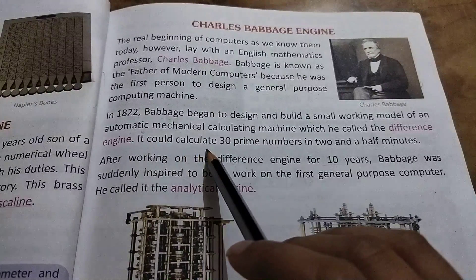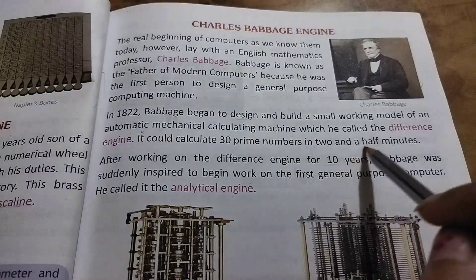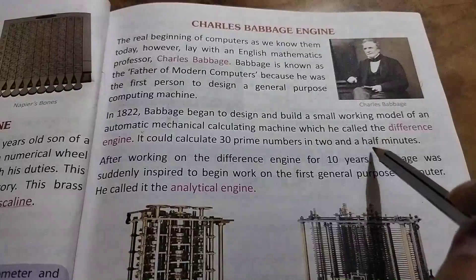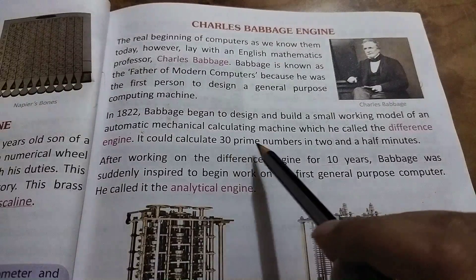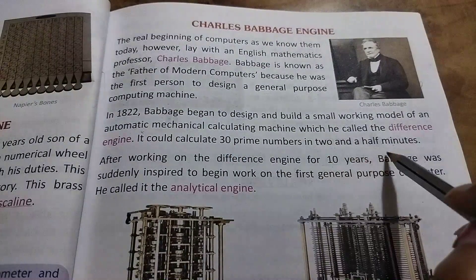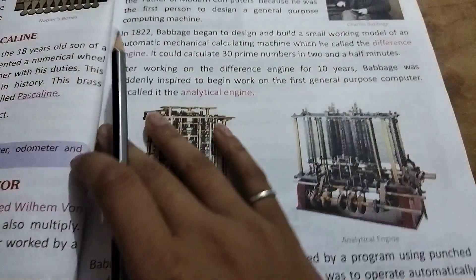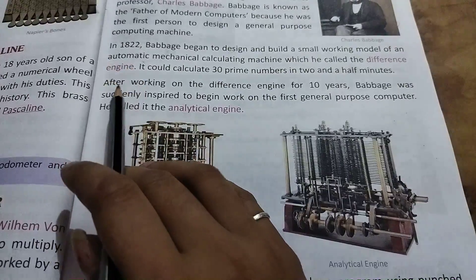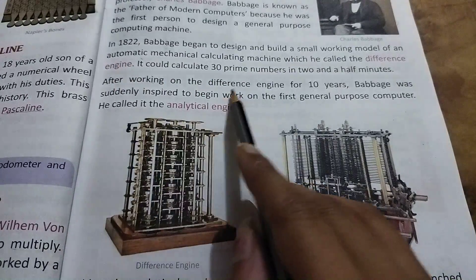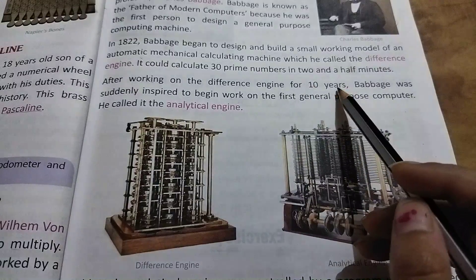The Difference Engine could calculate 30 prime numbers in 2 and a half minutes. After working on the Difference Engine for 10 years, Babbage was suddenly inspired to begin work on a new machine.